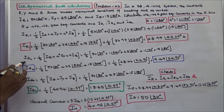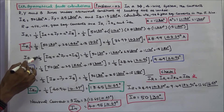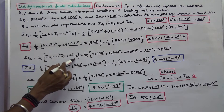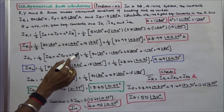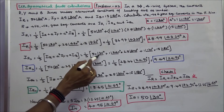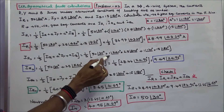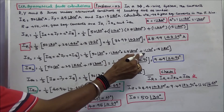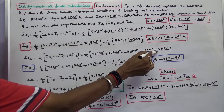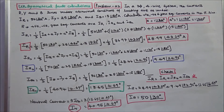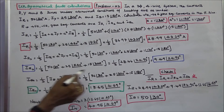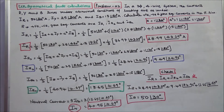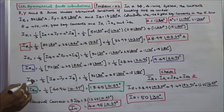Next, IR2, the negative sequence current: 1/3 into (IR + A²·IY + A·IB). That is equal to 1/3 into [50 angle 30 + (1 angle 240)(25 angle 300) + (1 angle 120)(15 angle 180 degrees)]. Negative sequence current IR2 is equal to 9.49 angle 24.96 degrees.